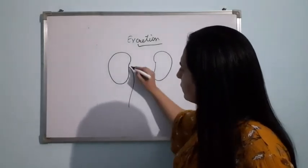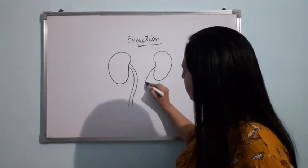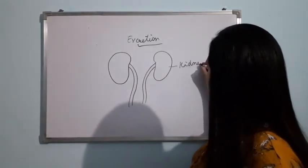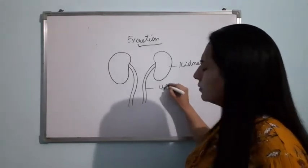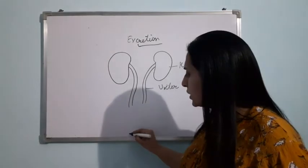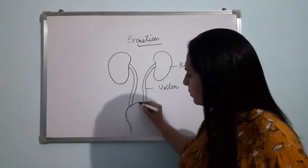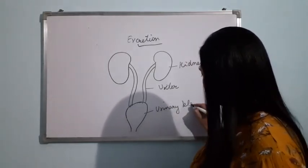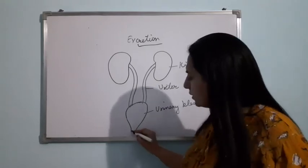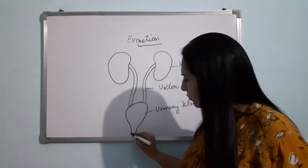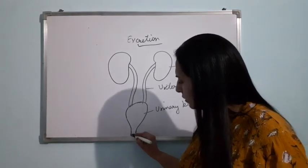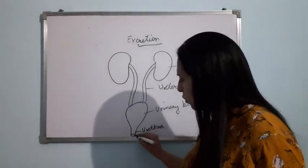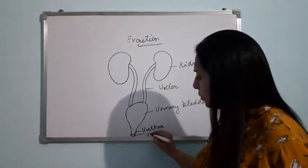Then there are ureters. Here we have the kidneys and the ureters. Then there is a muscular bag-like structure known as the urinary bladder. Then there is a small tube called the urethra, which opens out through an opening called the urinary opening. This urethra opens outside the body through the urinary opening.